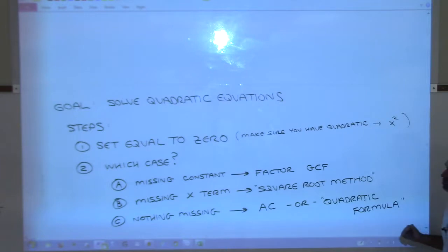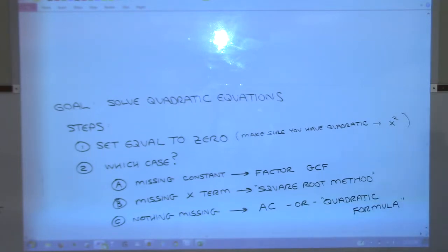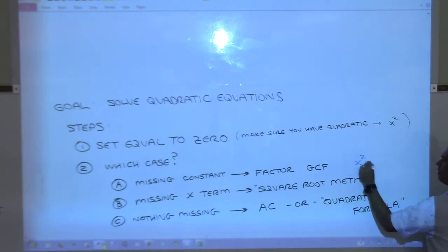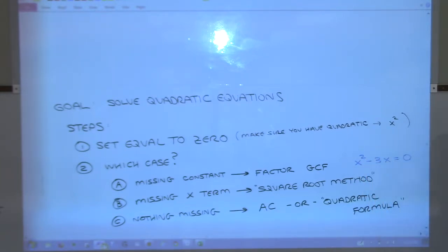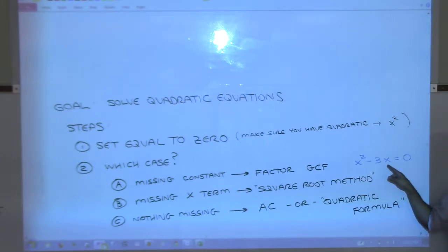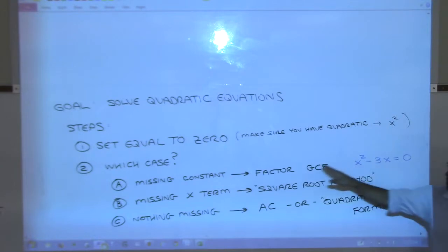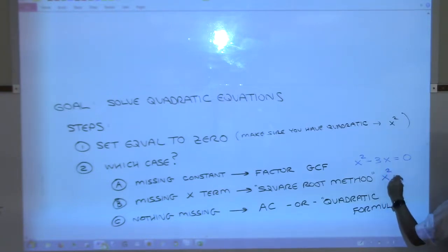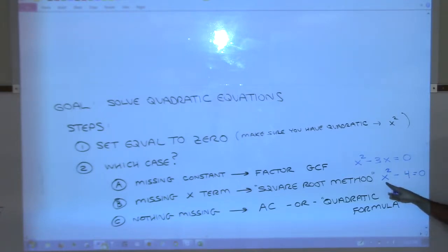The first case is if we're missing the constant term. For example, something like x squared minus 3x equals zero - notice it's missing that plus c. If we're missing the constant, we have just the x squared term and the x term, so we solve by factoring. If we're missing the x term, something like x squared minus 4 equals zero, we use the square root method.